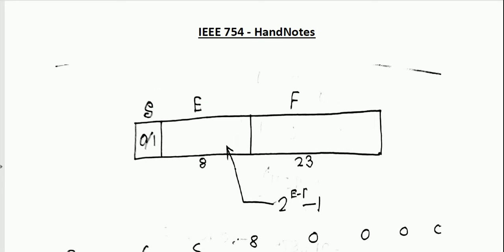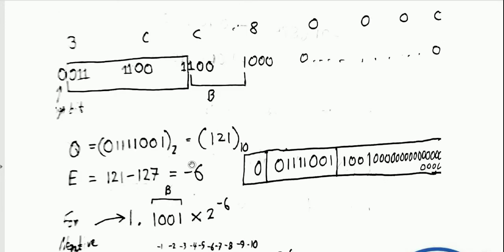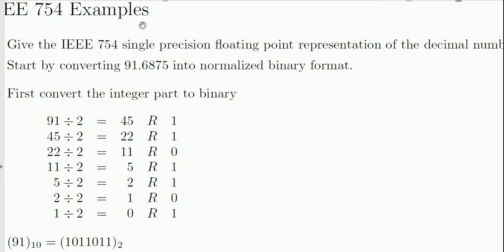We have this example over here which is 3CC800C. First let's go to the simpler examples. We have a number -91.6875 and we have to convert it into binary first.